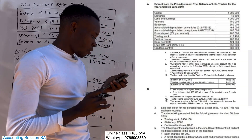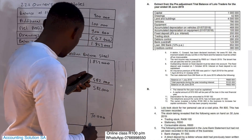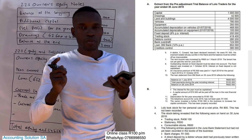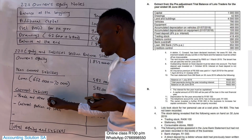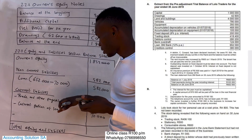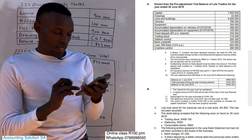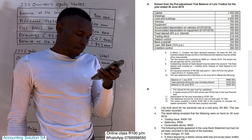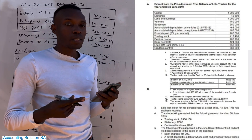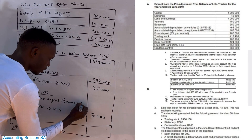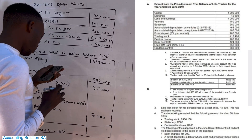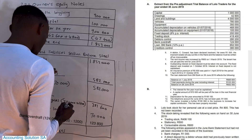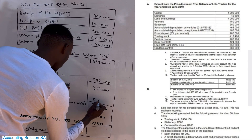Now we are going to trade and other payables. Number one, we take creditors control — the creditors control amount is 380,000. Please go and watch the other balance sheet video where I explain in detail what falls under trade and other payables. In this case we only have two items: creditors control, and the second one is accrued expense. Accrued expense comes from additional information number 12 — the telephone account for June 2019 has not been paid, so it is an accrued expense and a liability of 1,600. That gives a total of 381,600.